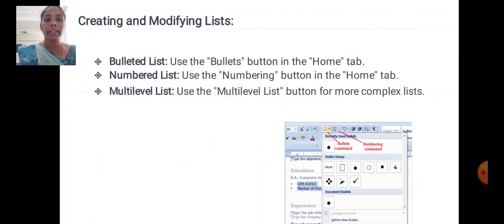Creating and modifying lists. Bullet list: use the bullet button in the home tab. Numbered list: use the numbering button in the home tab. Multi-level list: use the multi-level list button for more complex lists.